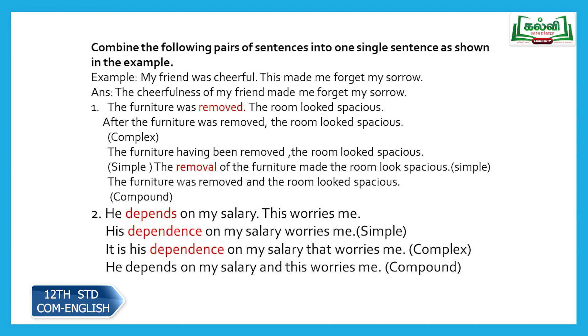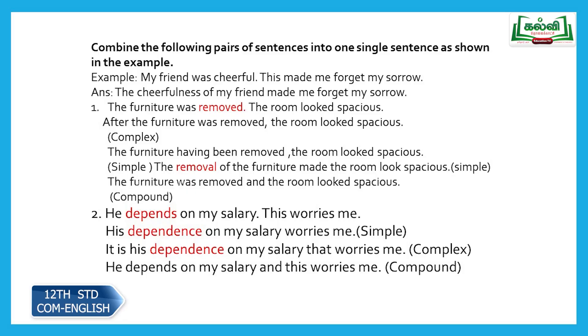Complex form: it is his dependence on my salary that worries me — I have used the noun form with finite verb 'is'. This is a complex sentence. Compound: he depends on my salary and this worries me — two main clauses connected by conjunction 'and'.